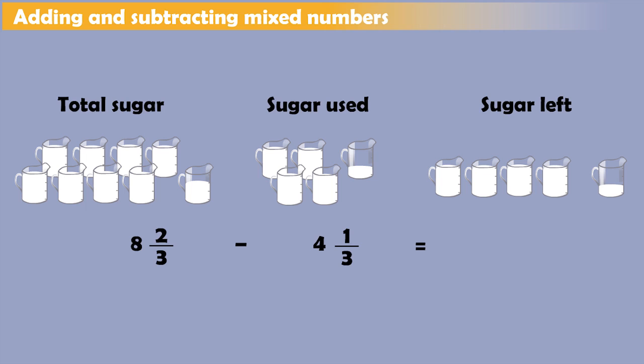In other words, we have 8 minus 4 full cups and 2 3rds minus 1 3rd of a cup, or 4 and 1 3rd cups remaining. So, the answer is 4 and 1 3rd cups.